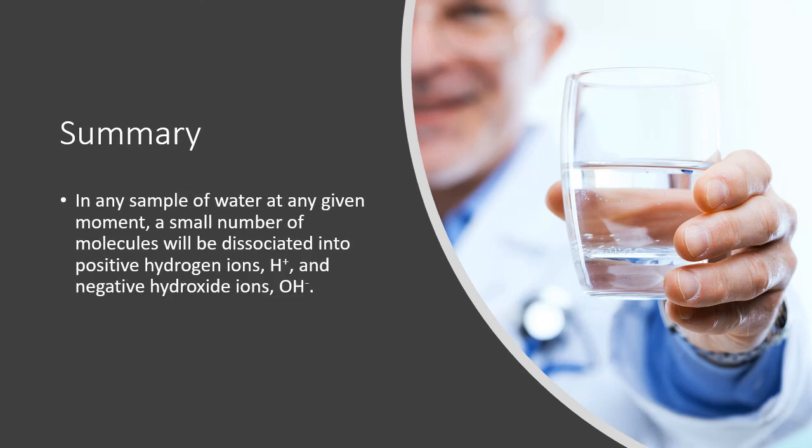So by way of summary, in any sample of water at any given moment, a small number of the molecules will be dissociated into positive hydrogen ions and negative hydroxide ions. So in a typical glass of water, you've got mostly water molecules, but there are also a few hydrogen ions and a few hydroxide ions in the mix. And there will always be equal numbers of hydrogen and hydroxide ions in pure water, because every time a molecule splits, we get one of each. That's it.